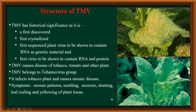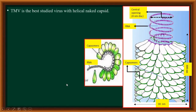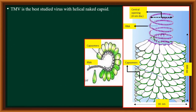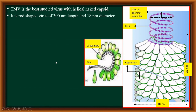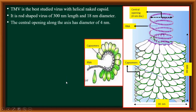The tobacco mosaic virus is the best example, or it is a representative, of viruses with a helical naked capsid. That means it is the capsid that gives rod shape to the virus and it is non-enveloped. Such a rod-shaped virus is 300nm in length and 18nm in diameter. The central opening along the axis of this virus has a diameter of 4nm. You can see here the central hole in the virus.